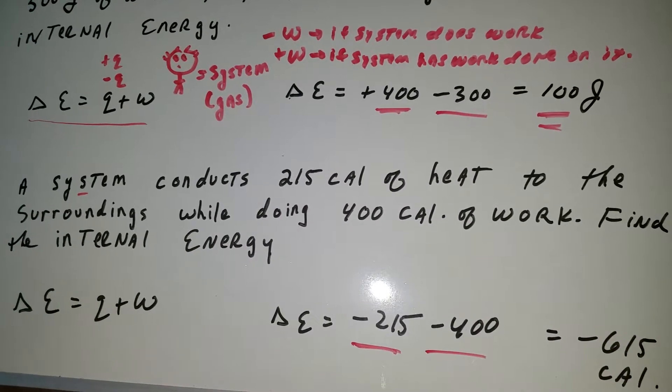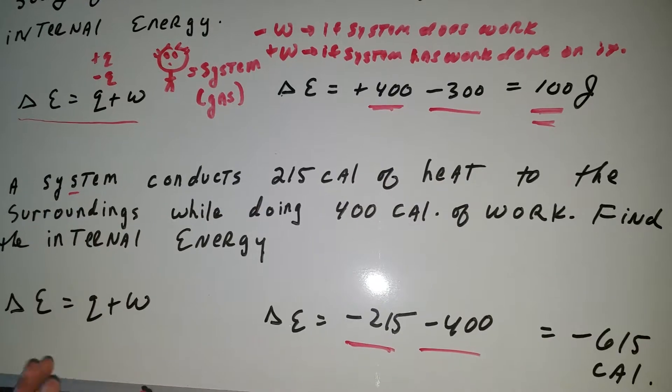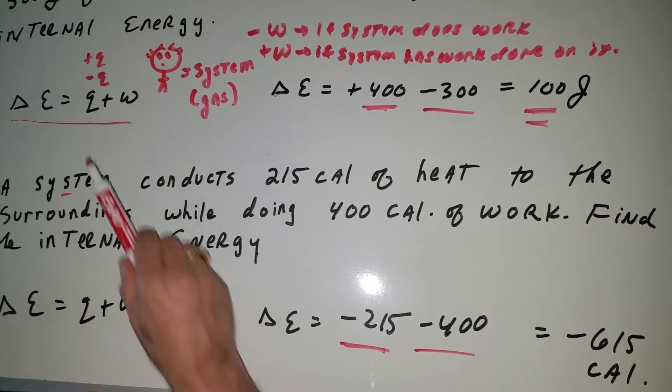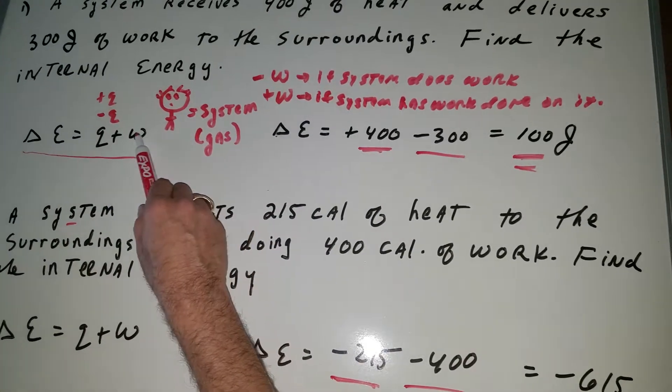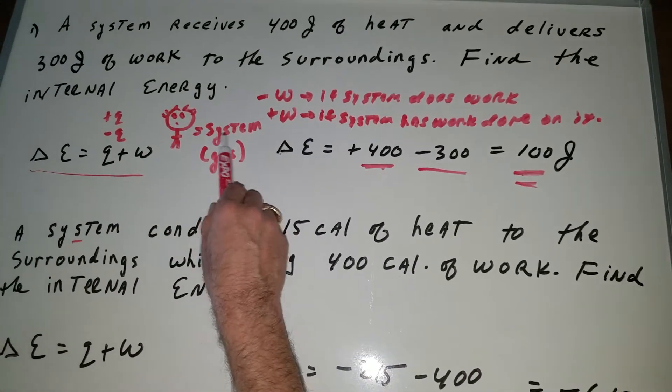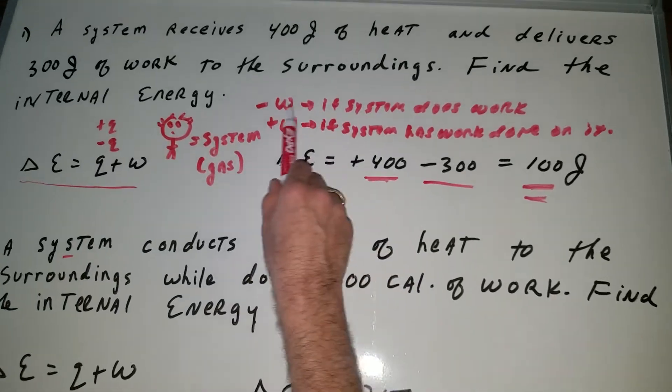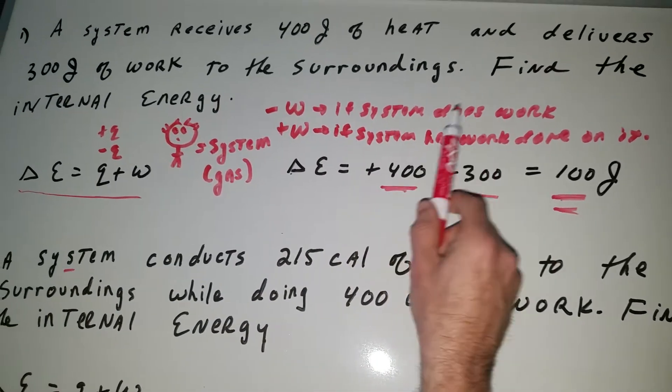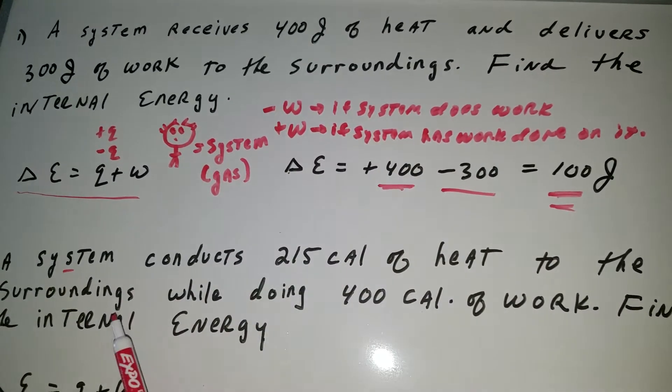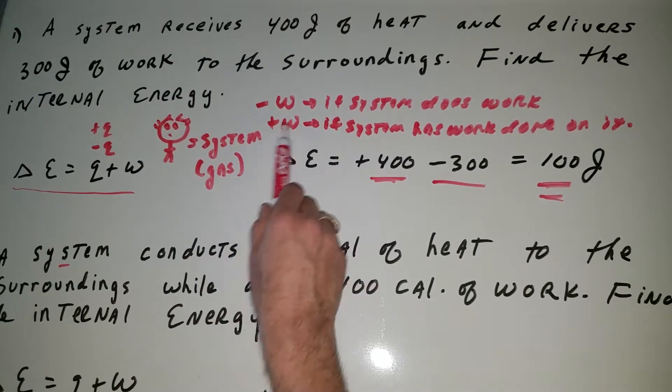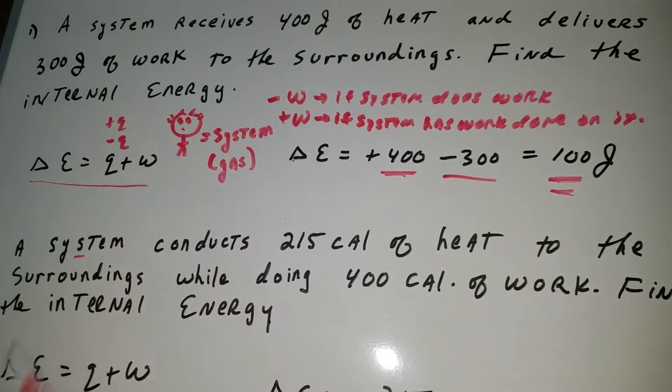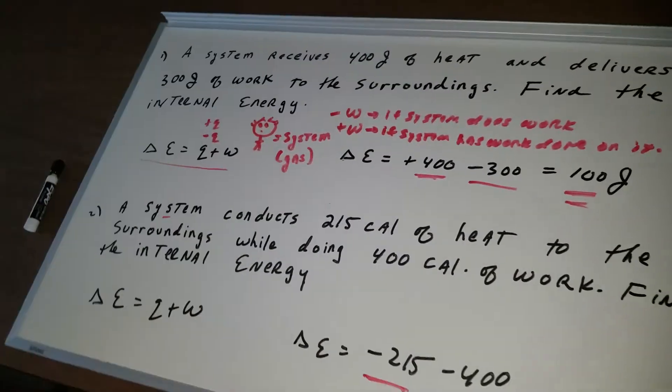So as you can see, the bottom line is when you use this formula, you just got to be a little careful. If heat is absorbed, it's plus Q. Heat is released, minus Q. And then for the work, just say to yourself, you are the system. If you do the work, meaning the system does the work, negative W. If the system has work done on it, positive W.